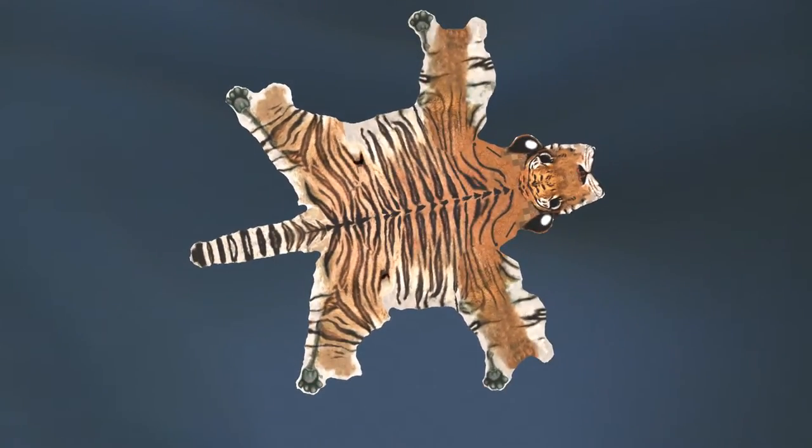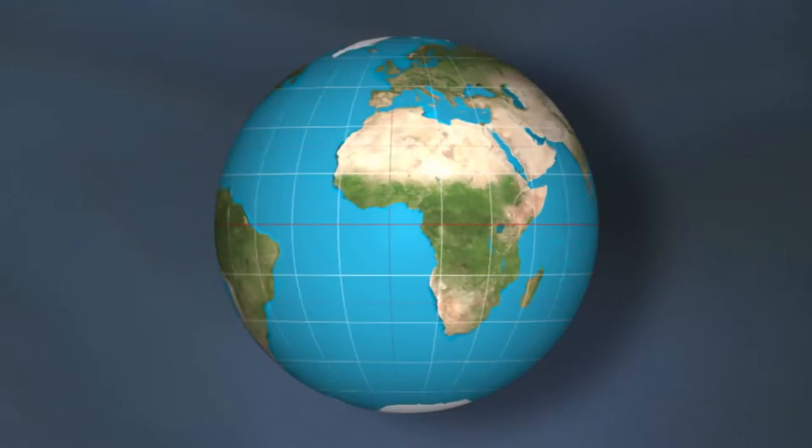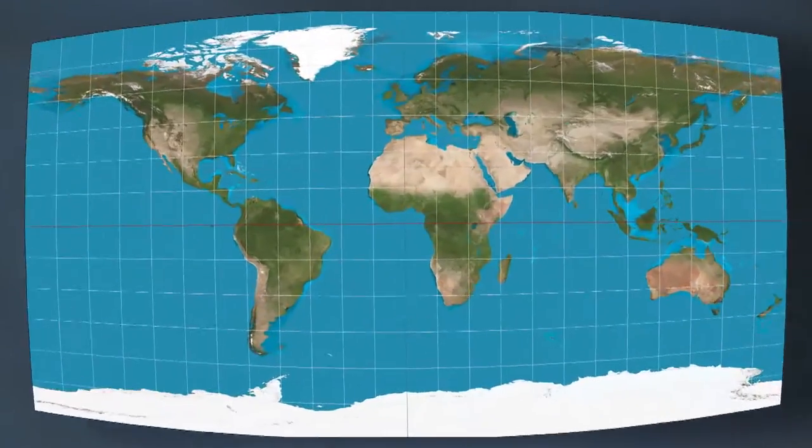This method is what's called surface parameterization, which is to map a curved surface to a flat surface. This is a problem that dates back centuries. And what's interesting about it is you can't do it perfectly. If I need to take something curved and make it flat, I have to distort it somehow.